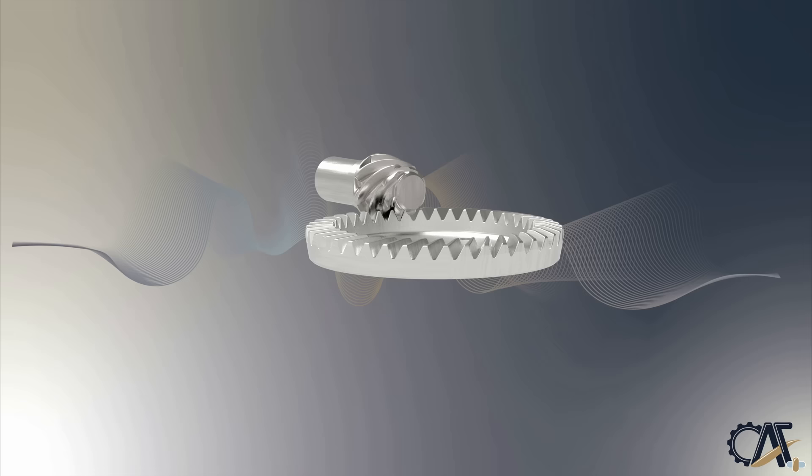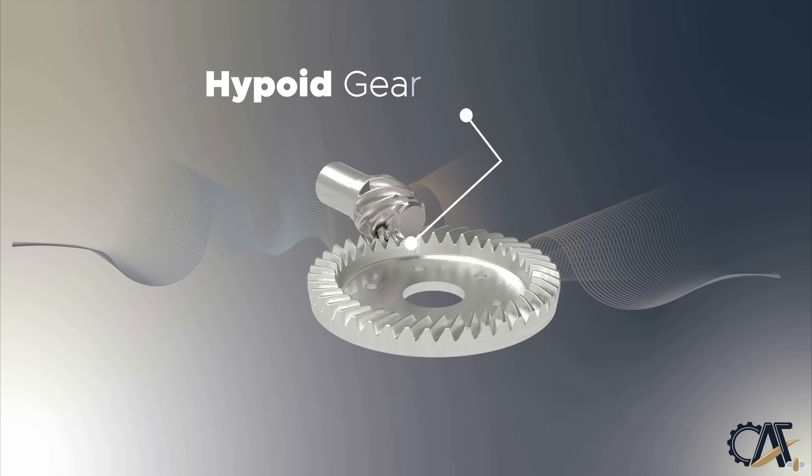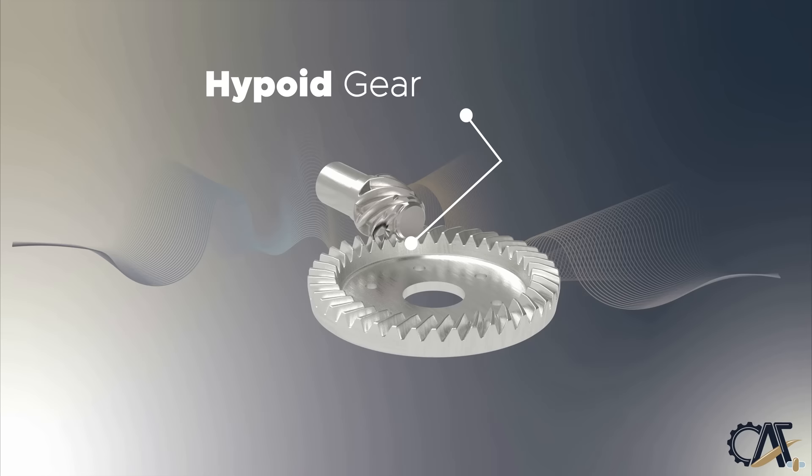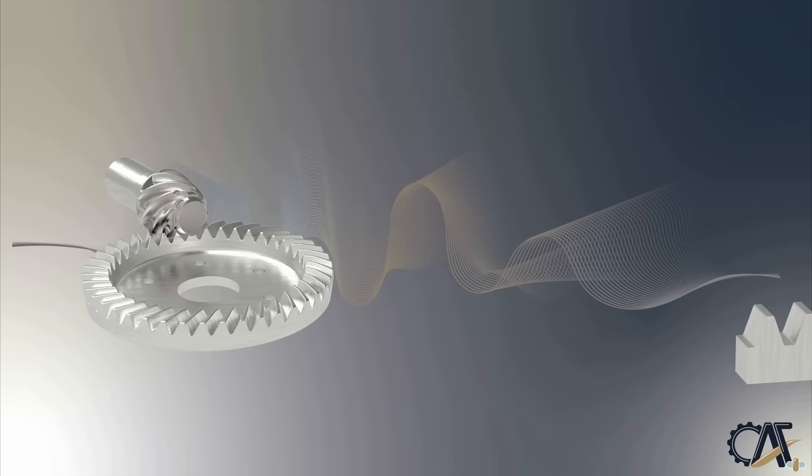Next on the list we have hypoid gears. They operate on shafts that do not intersect. The hypoid gear is offset from the gear center, allowing unique configurations and a large diameter shaft. The larger shaft diameter means they can have large pinion diameters and make them a good fit in torque demanding applications.